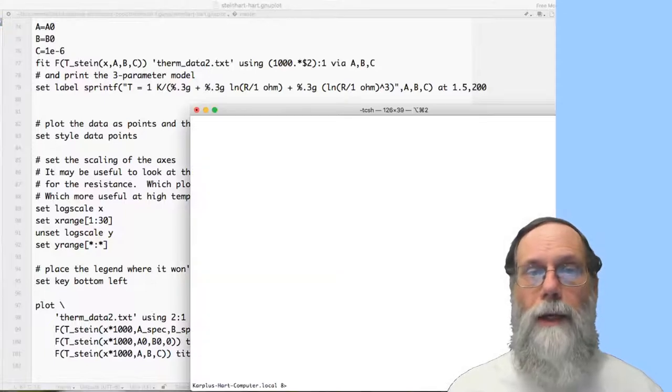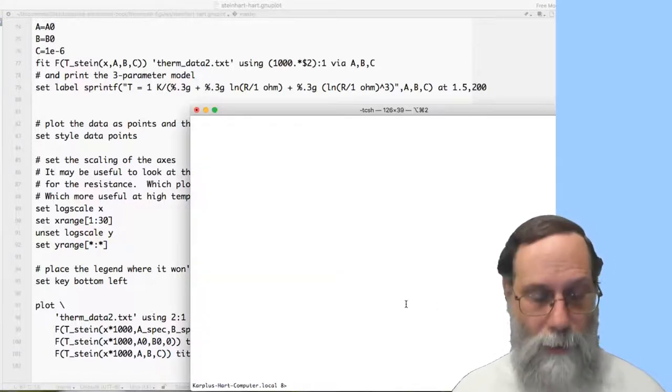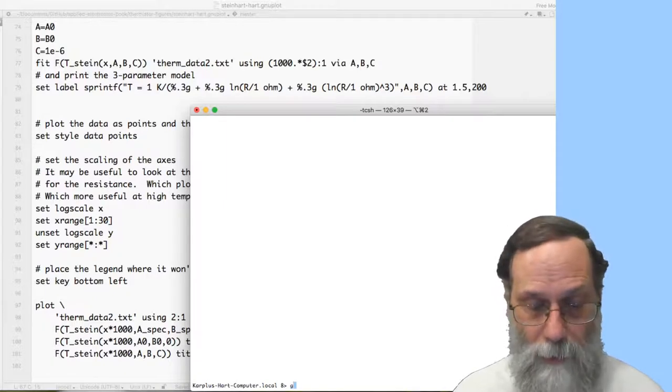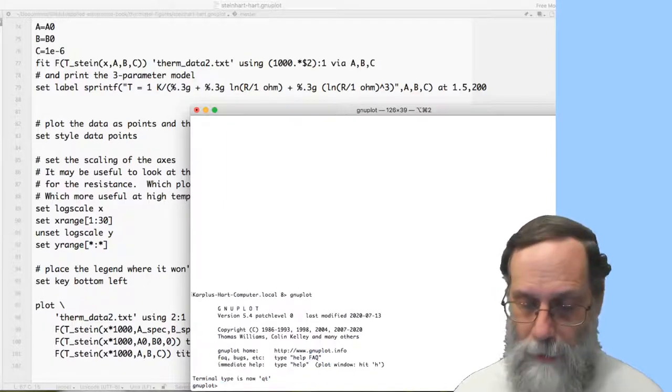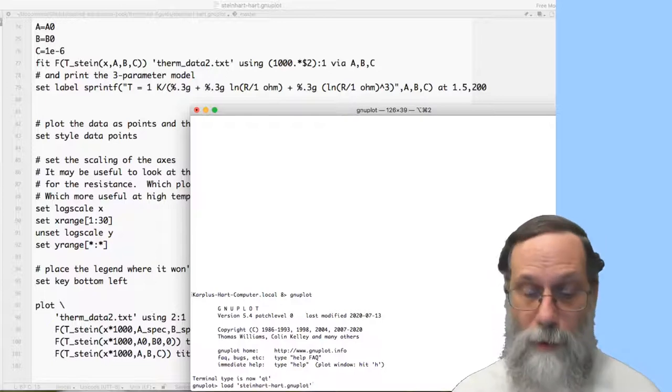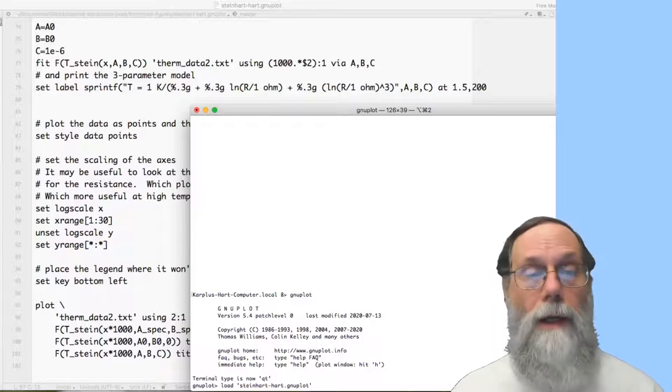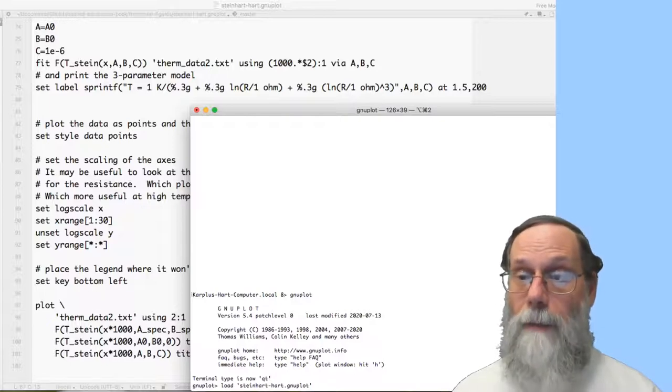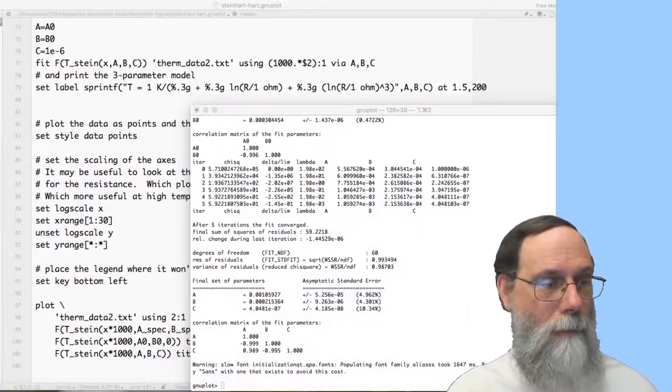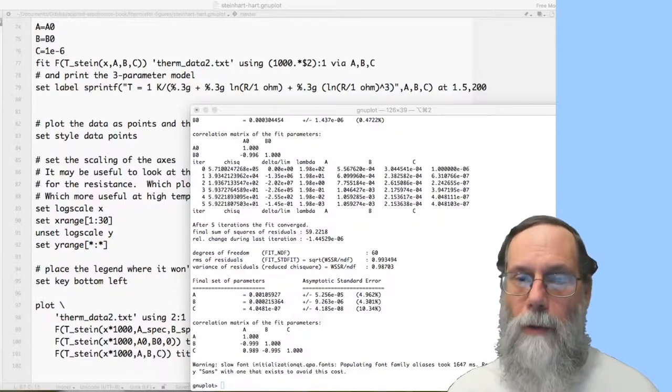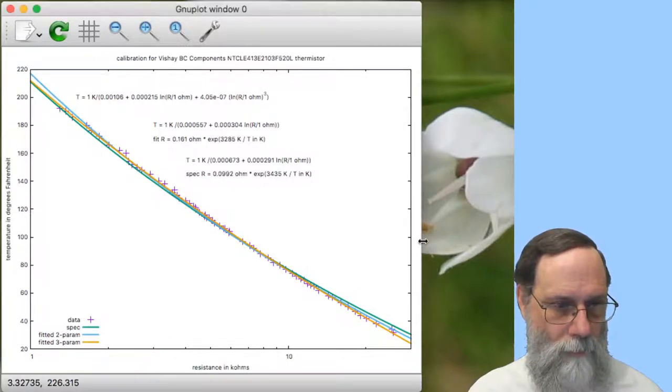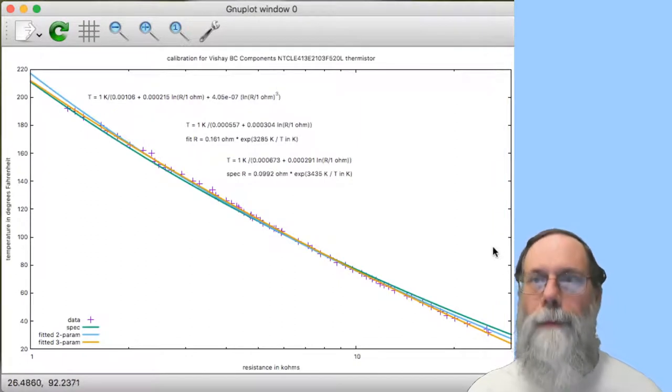So what I'm going to do now is bring up a new plot. And all I'm going to do is I'm in the same directory where I have both the data and this steinhardhart.gnuplot file. And so I'll run gnuplot and then type load steinhardhart.gnuplot, in quotes. And that'll load the entire script file. So this is just running the commands from that file. And then let's see if I can bring up the new plot window. Let's make that a little wider.